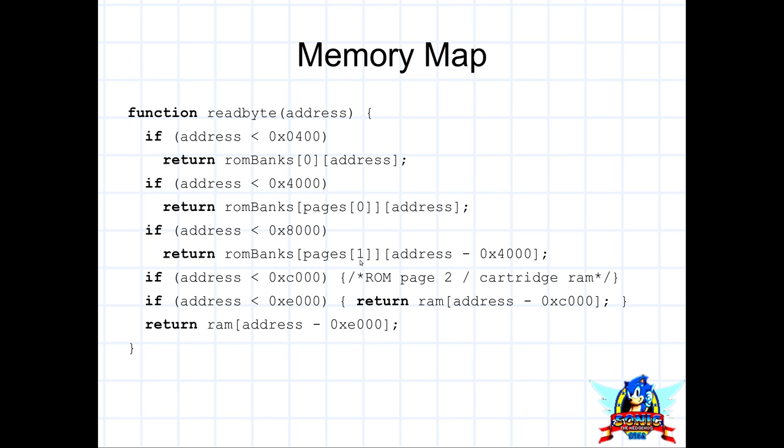If it's less than 0x8000 we do the same but use page one, and the index into that page is 0x4000 less than the address given. Then we look at other pages — for 8000 to C000 there's some handling of whether it's ROM or RAM. Otherwise we know we've hit the RAM, and we look at the RAM block given by the offset from the beginning of RAM. This last line covers the duplicate of RAM — reading from E000 onwards sees the same 8k again. You can see how we start to put this together to make an emulator.